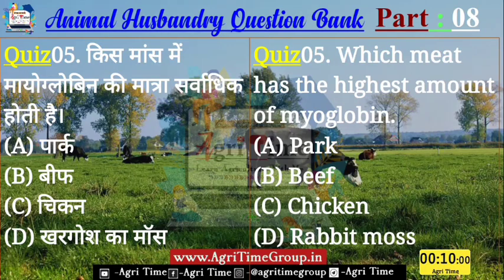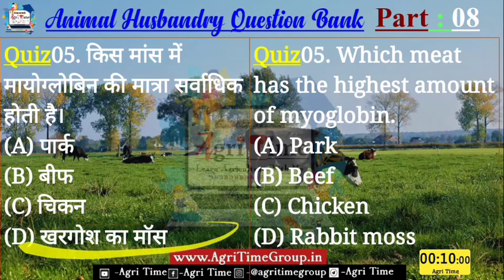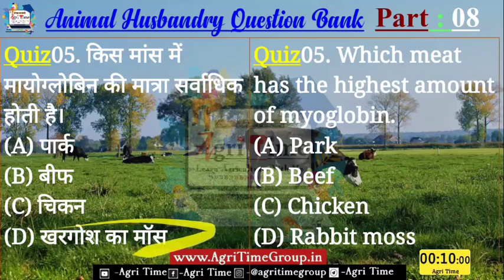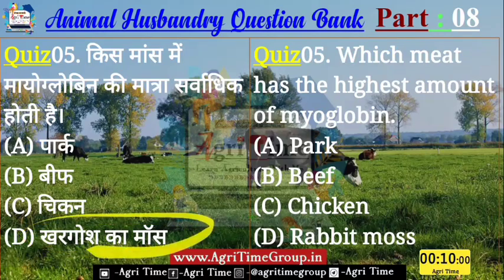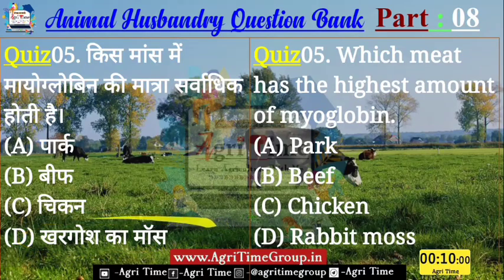Time up होता है, dear Agrarians। Quiz number 5 का जिन्होंने D answer comment किया है — खरगोश का मांस — उन सभी का answer right है। Myoglobin की मात्रा सर्वाधिक खरगोश के मांस में पाई जाती है। चलिए बढ़ते हैं अगले question की ओर।